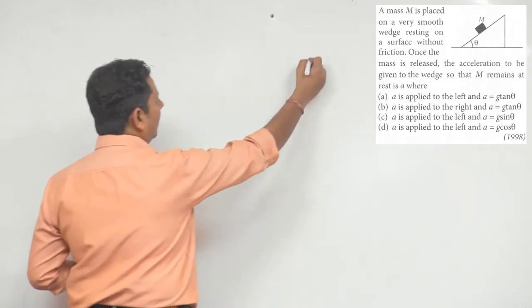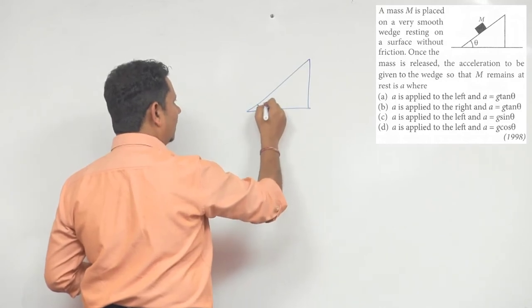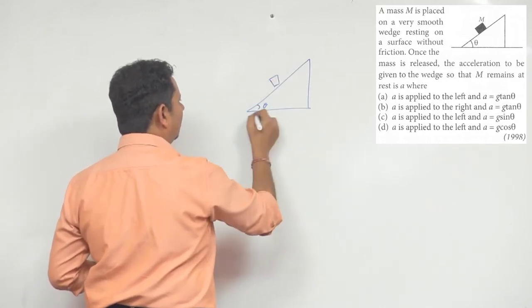So the setup is: there is an inclined plane like this, the angle is theta here, and we have placed mass m on it.